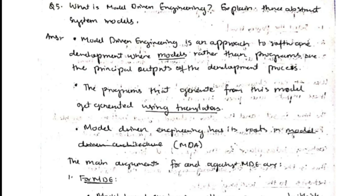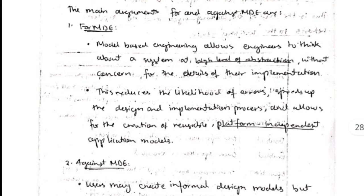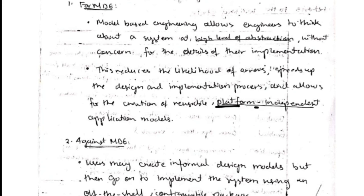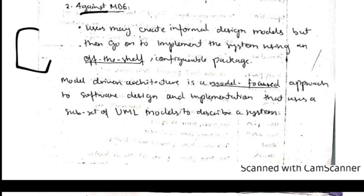Model-driven engineering uses models to show the flow of a process. An advantage is that it doesn't require many details, allowing free thinking about ideas. It can be developed as a platform-independent model, so the language to be used is not a concern. A disadvantage is that due to lack of details, there is a chance of using off-the-shelf or old products that are not effective, causing loss of efficiency and performance.